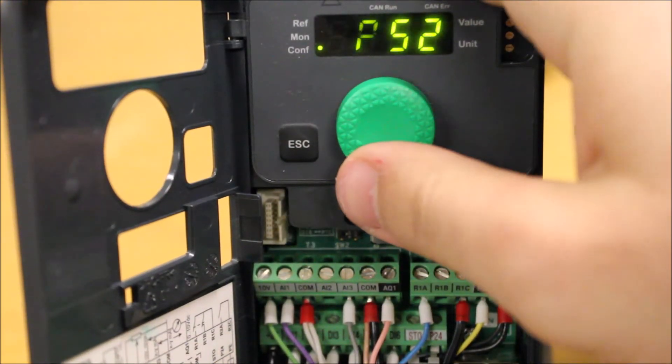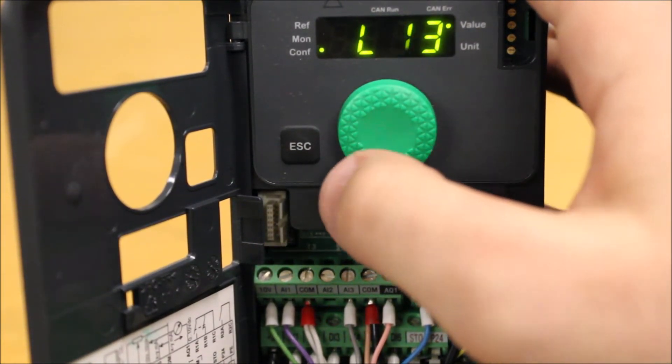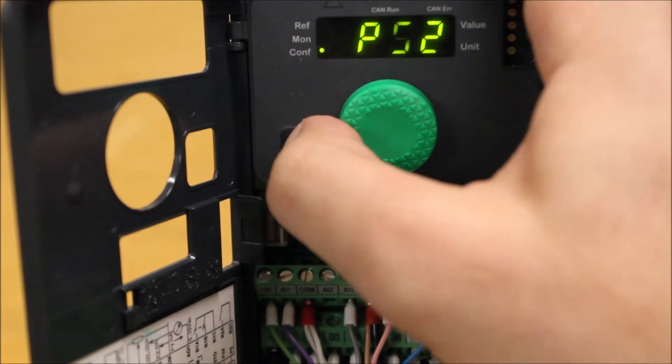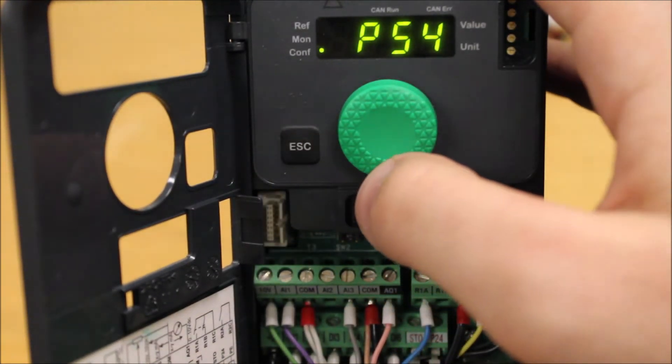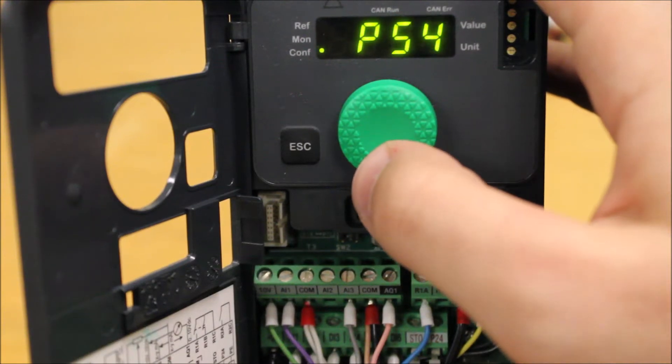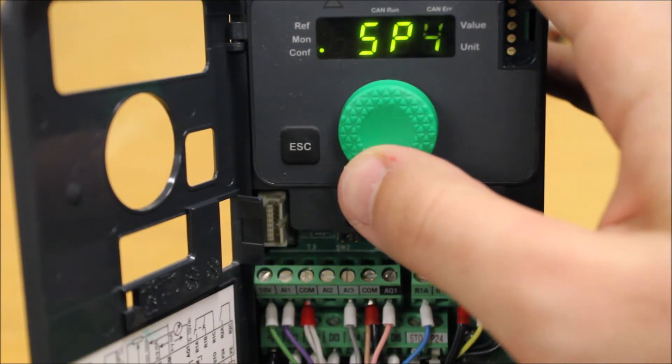Once we program the logic inputs, which is the PS numbers, the PS2, 4, 8 are the actual digital inputs you have to assign them to. But the speeds themselves, in the same menu, you have to find the SP2, 3, and so on and so forth. So we want to assign the SP2 to 30 hertz. This is the first speed, SP2.